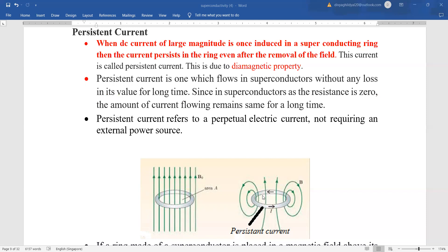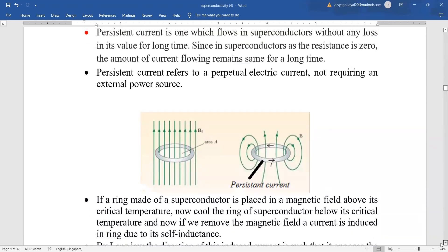Persistent current is one which flows in superconductors without any loss in its value for a very long time. So this property of superconductors can be used in the preparation of superconducting magnets which will supply current for a very long time. Since the resistance is zero, the amount of current flowing through them will remain same and it will remain for a longer time. They will not require any type of external potential difference or power supply.